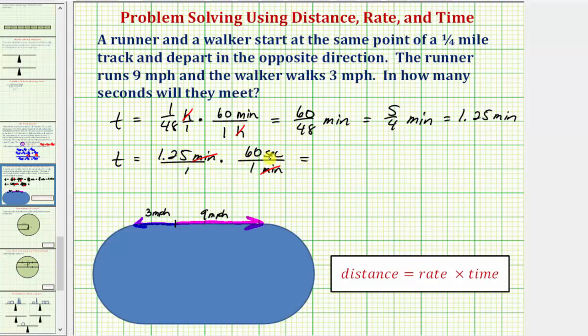So one point two five times sixty is equal to seventy-five. And therefore the time it takes for the walker and runner to meet on the quarter mile track is seventy-five seconds.